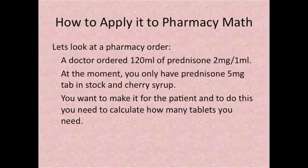How to apply it to pharmacy math. Let's look at a pharmacy order. The doctor ordered 120 ml of prednisone 2 milligrams per 1 ml. At the moment you only have prednisone 5 milligram tablets in stock and cherry syrup. You want to make it for the patient and to do this you need to calculate how many tablets you need in order to grind them and then mix them with the cherry syrup.